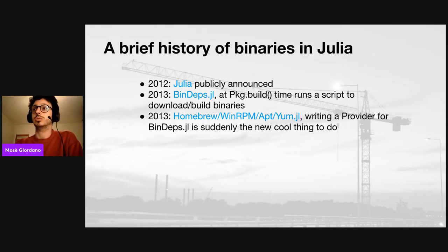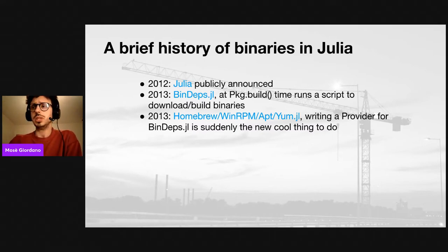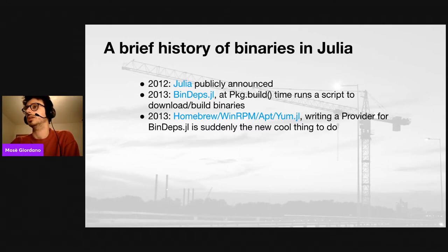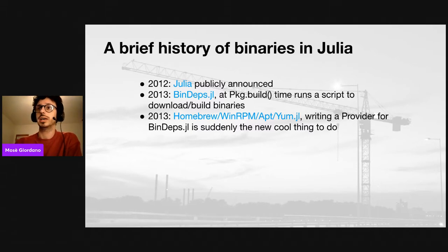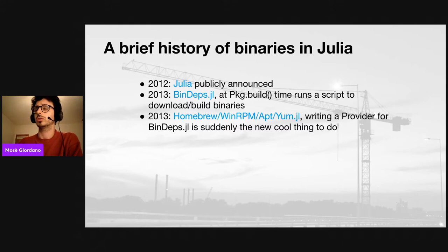This is not always possible because maybe you need a library which is not available on the system in one of these providers, or you need a specific version with some variants for your package. There was also the option to compile the libraries on the user's machine as a fallback solution. But this didn't work very well in general because installation of libraries required an additional step — pkg.build — which was not very straightforward, because maybe sometimes you forgot to run this command. So there were plenty of problems in the end.